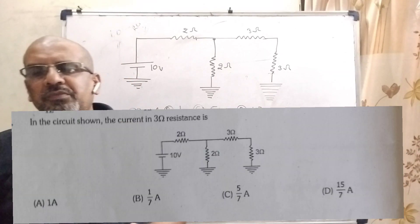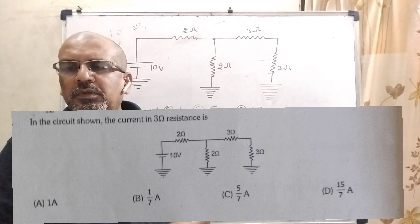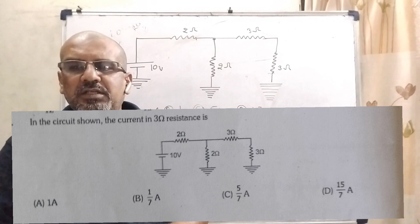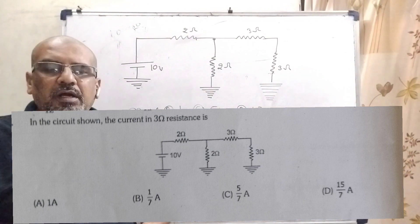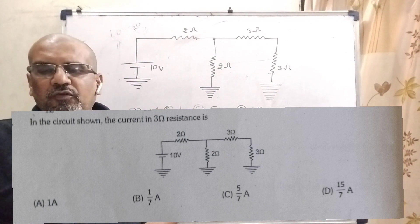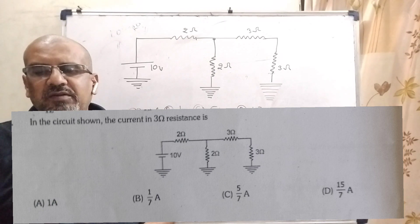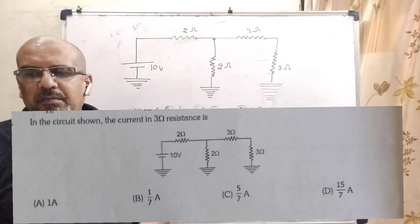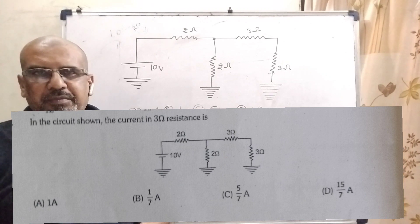Now, here is the question. In the circuit shown, the current in the 3 ohm resistance is — here we have given the diagram and there are four options. Option A: 1 ampere. Option B: 1 by 7 ampere. Option C: 5 by 7 ampere. And option D: 15 by 7 ampere.